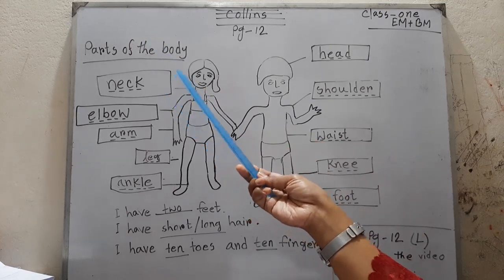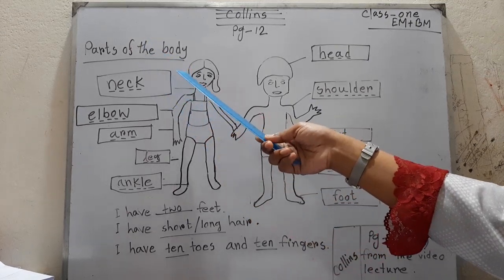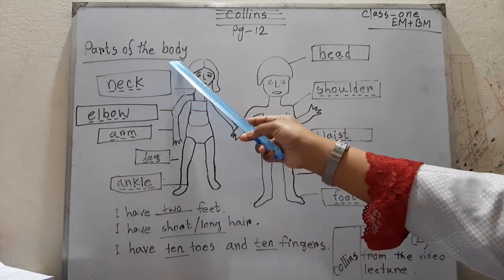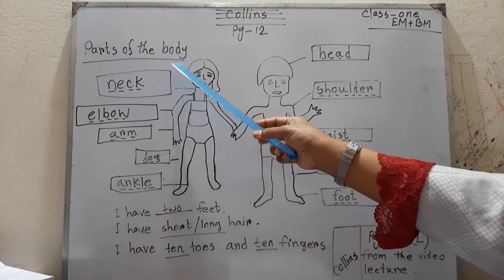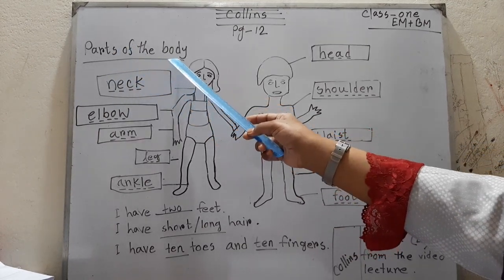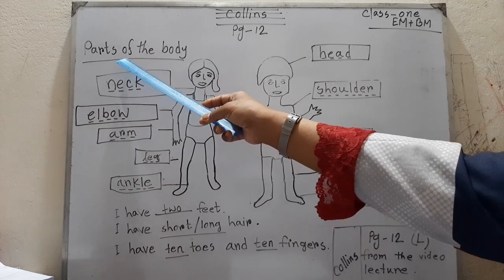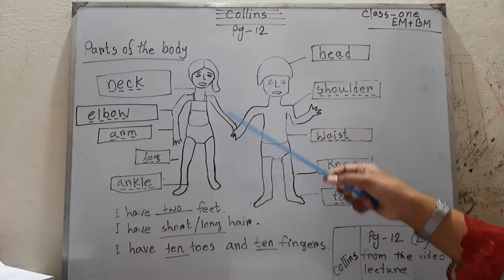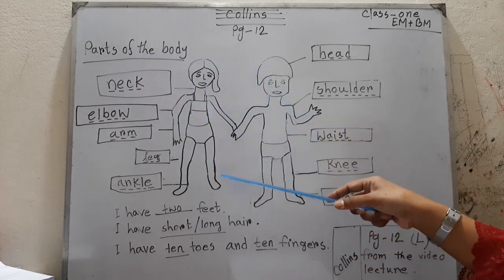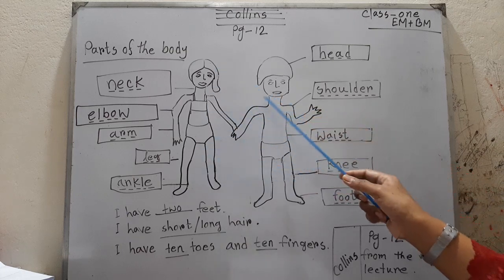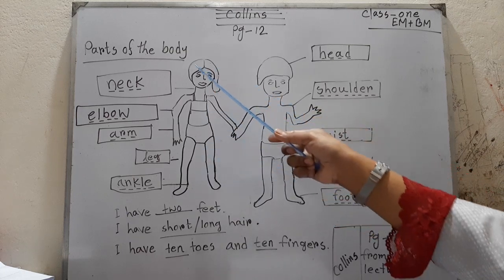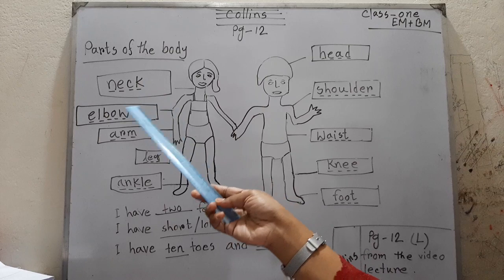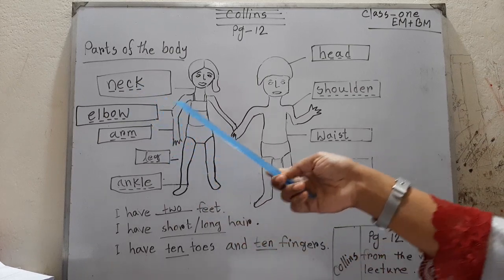Today's topic is parts of the body. 'Parts' means 'ongsho', 'body' means 'shorir' or 'deho', so 'parts of the body' means the different parts of our body. Today we will learn what the different parts of our body are called.